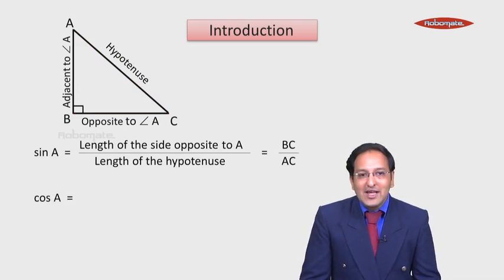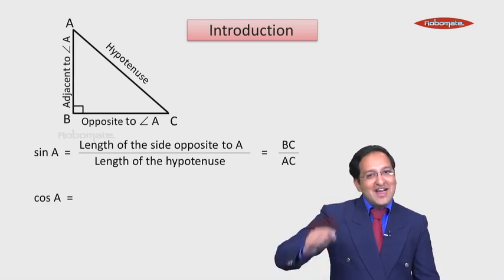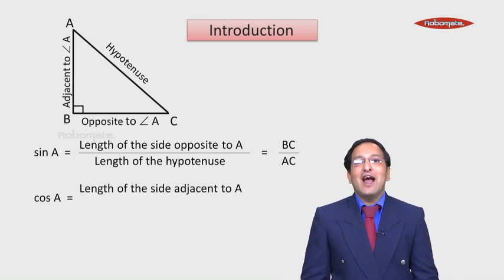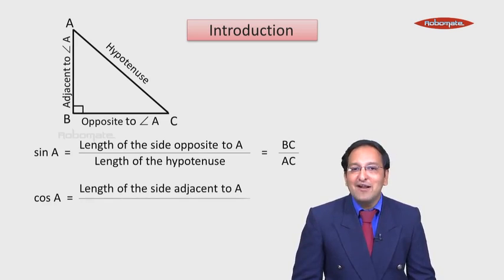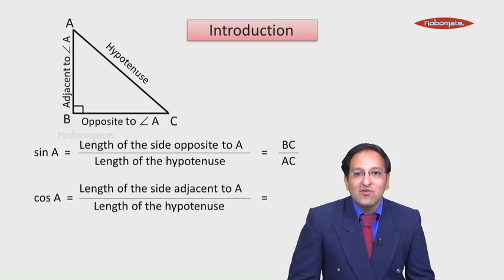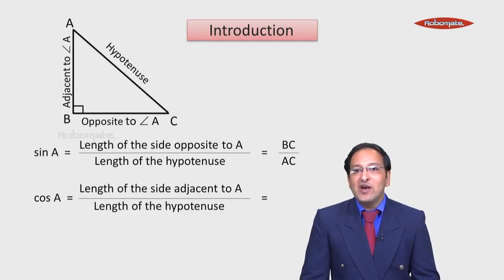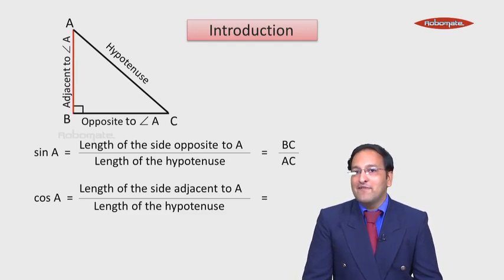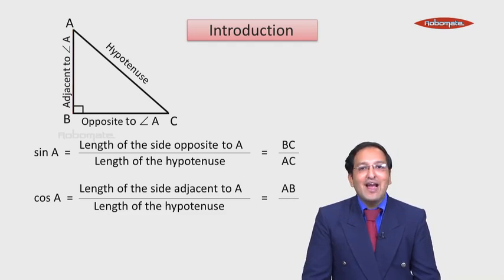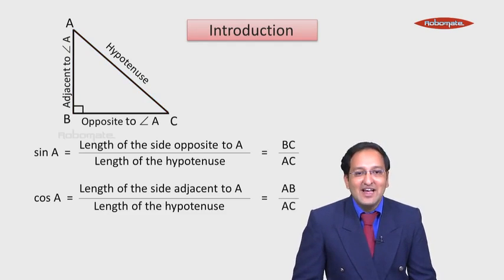Cos A — do you remember the formula of cos A? It is the length of the side adjacent to A divided by the hypotenuse. From the figure, the length of the side adjacent to A is AB, divided by hypotenuse AC. So cos A equals AB upon AC.